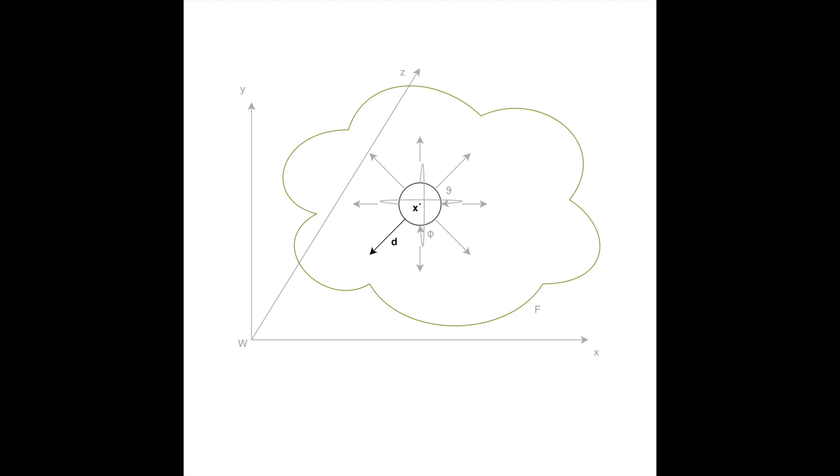We enter x and d into the neural network and get the colour and volume density emitted from x along d.